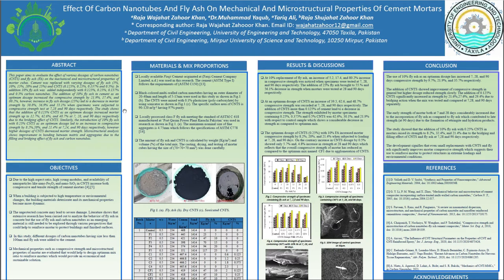The results showed that the addition of 10 percent fly ash as the optimum dosage can increase compressive strength by 21, 17, and 80 percent. However, when we increase the dosage of fly ash beyond that optimum, it reduces the compressive strength of cement mortars.